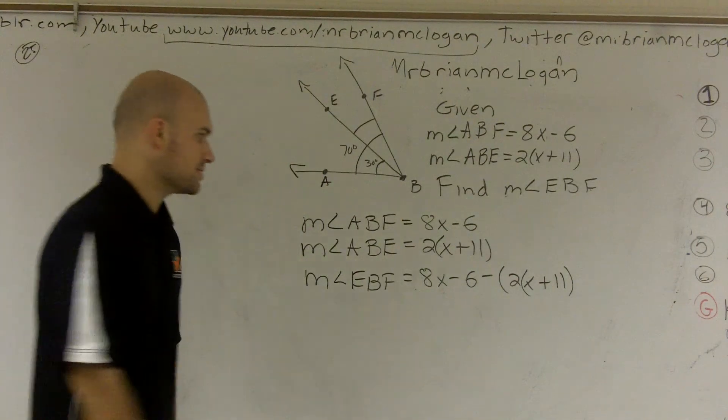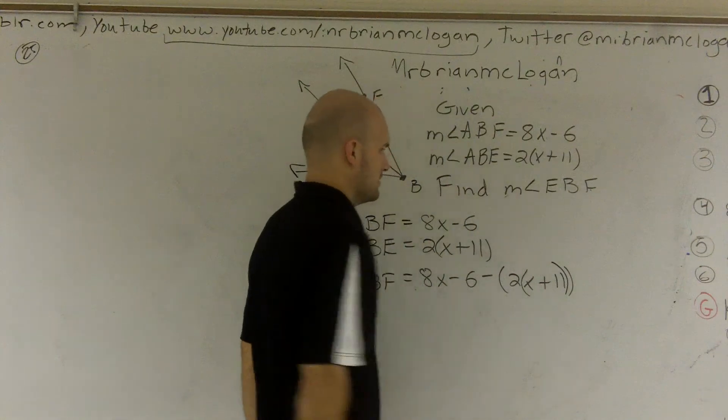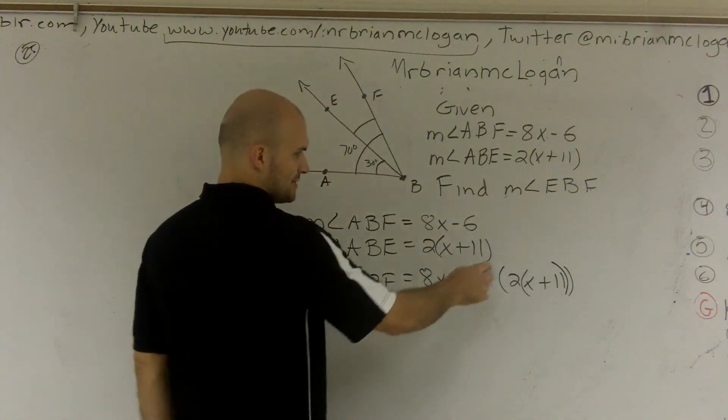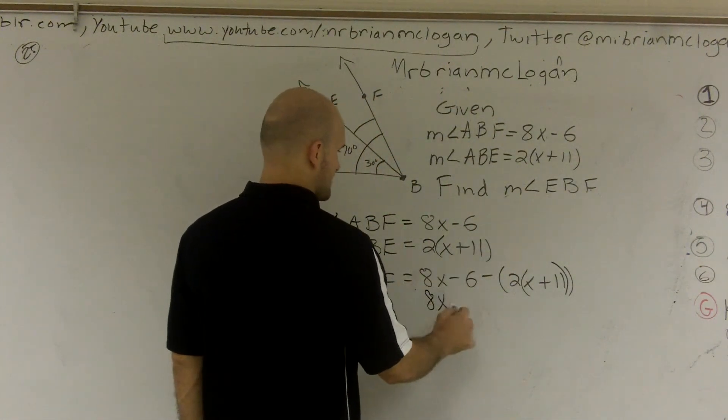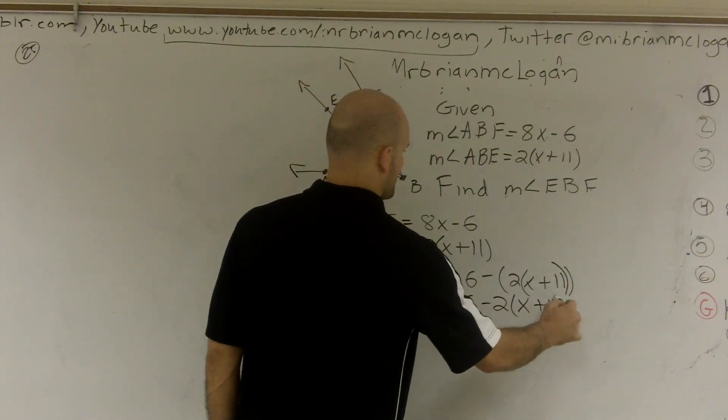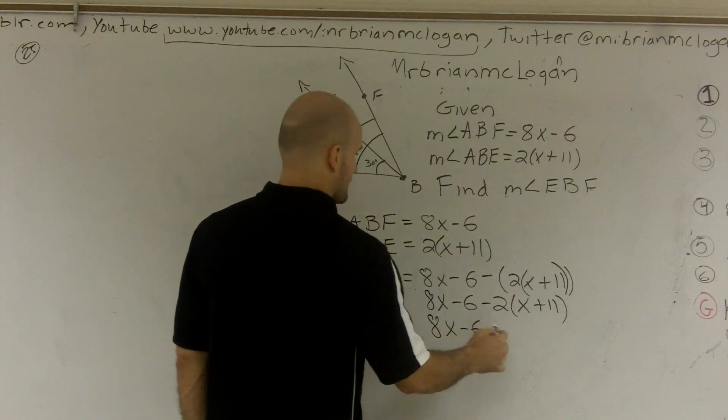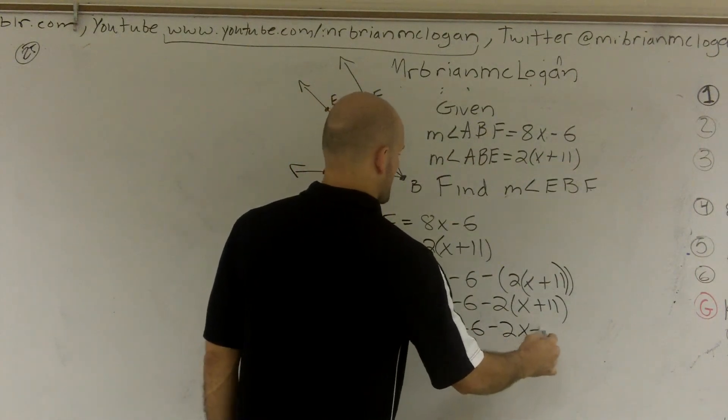All right, so, I have a double parentheses, right? I need a negative sign, so I can distribute this negative sign here, so I get 8X minus 6 minus 2 times X plus 11. Now I can use distributive property again to get negative 2X minus 22.